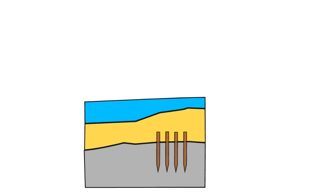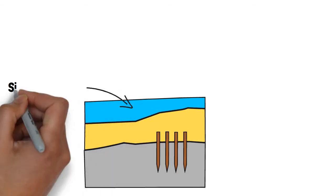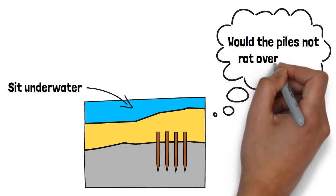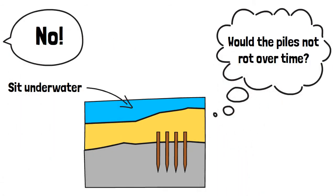As Venetians were using wooden piles for foundations, and these would sit under water, you might think to yourself, would the piles not rot over time? The answer to this was a resounding no.